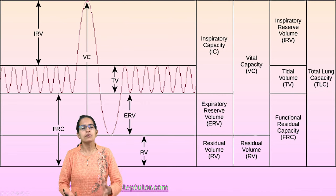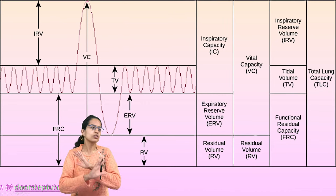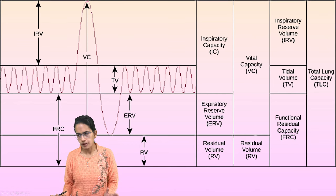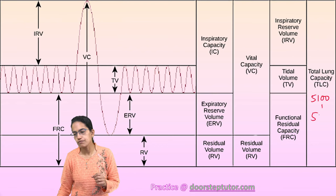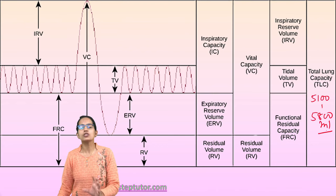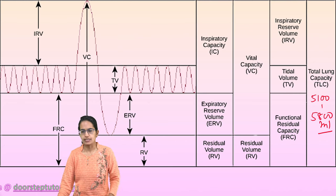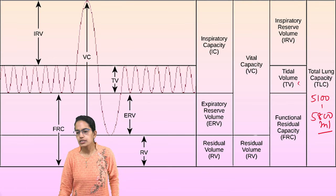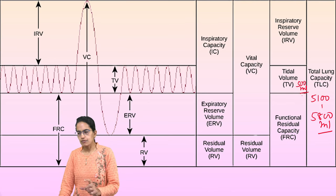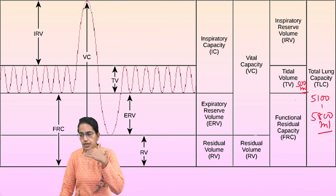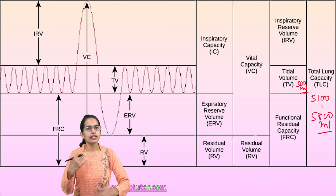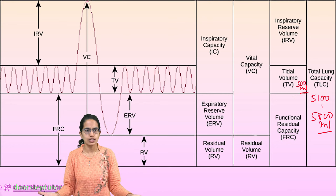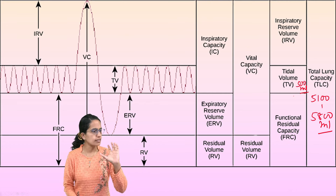Total lung capacity is the maximum volume both lungs can hold after maximum inhalation — around 5100 to 5800 ml. Tidal volume is around 500 ml — the volume of air breathed in and out during normal, involuntary breathing.